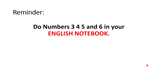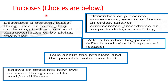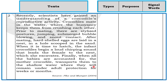Now you're going to complete numbers two through five in your English notebook. The choices for types are: description, sequence, cause and effect, comparison and contrast, and problem and solution. For the purposes and signal words, you will select from the given options provided. Write the type, purpose, and signal words for each item.